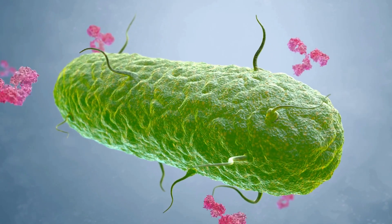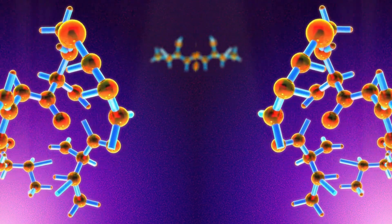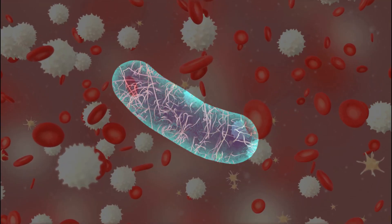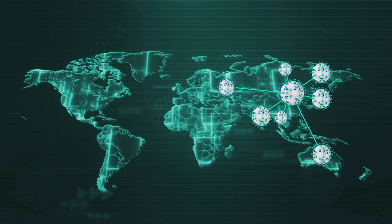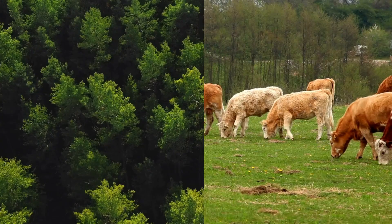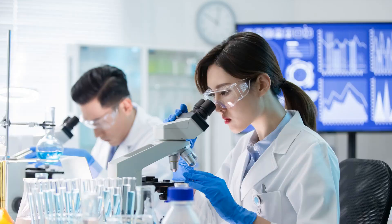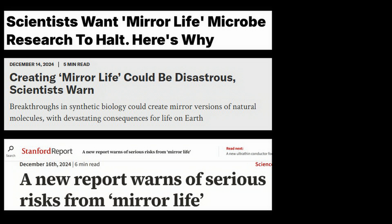Our body's immune system recognizes harmful bacteria by detecting specific proteins on their surfaces. But proteins made from mirror amino acids may not be detectable by our immune system. If this happens, our body would be unable to identify or destroy such bacteria. Additionally, most antibiotics we use today would likely be ineffective against these mirror bacteria. This means that if a disease caused by such bacteria were to emerge, we might have no way to control or treat it. This could potentially affect all life forms on earth. If such bacteria were to escape from a laboratory, they could potentially trigger a mass extinction event.